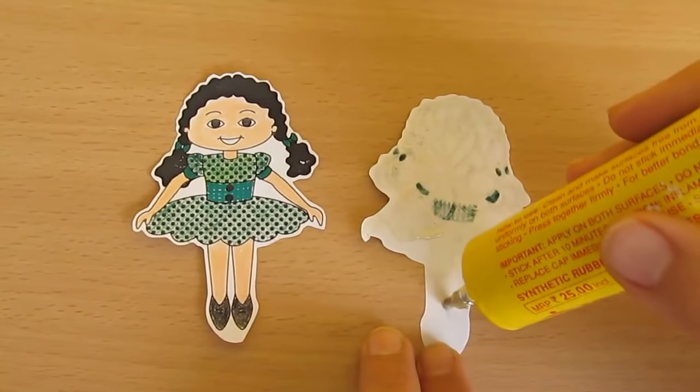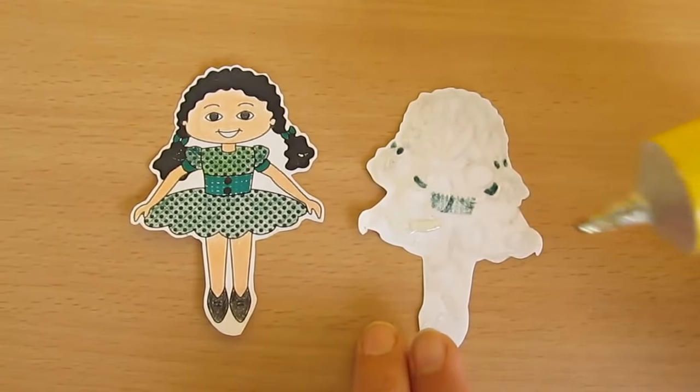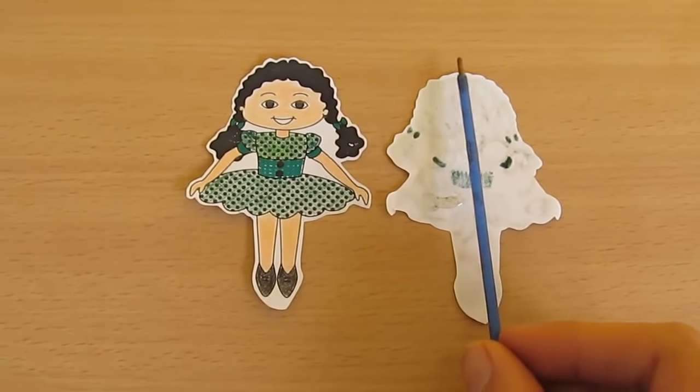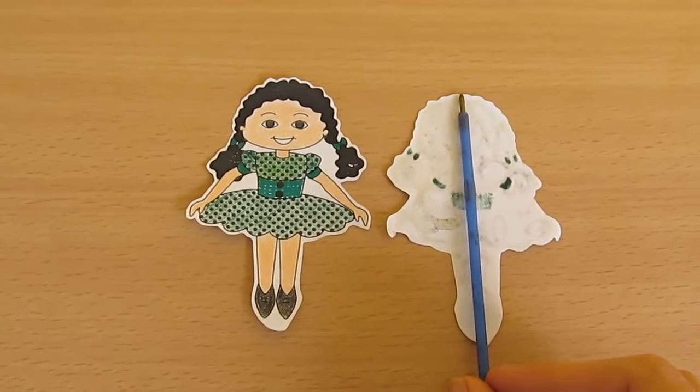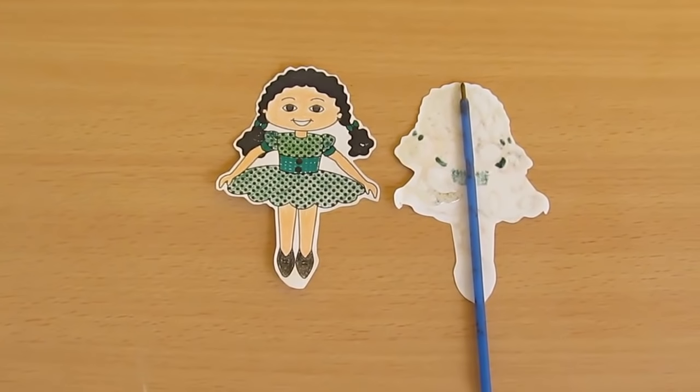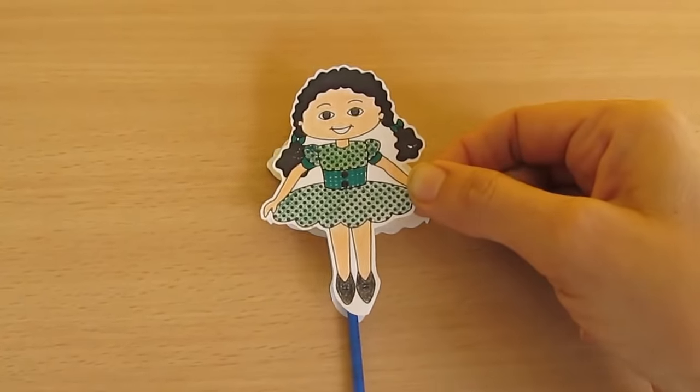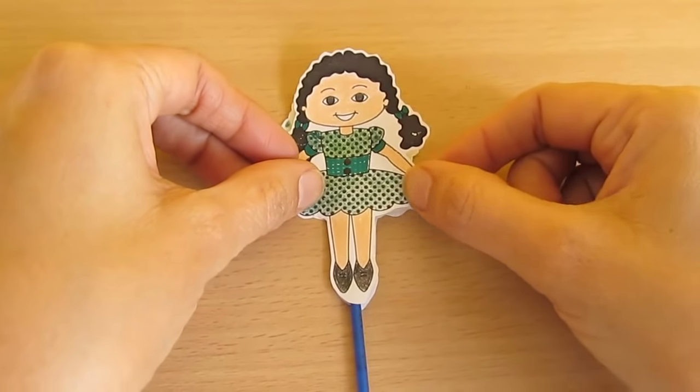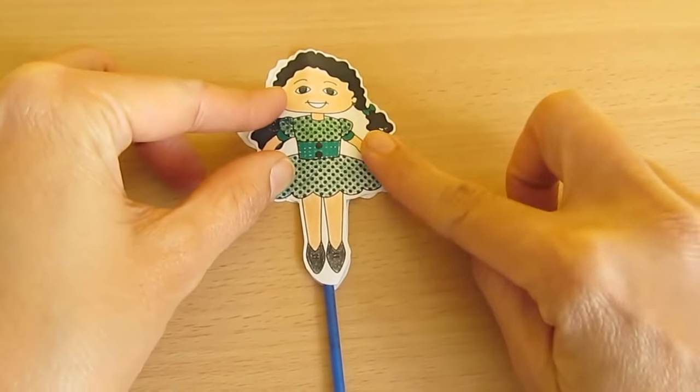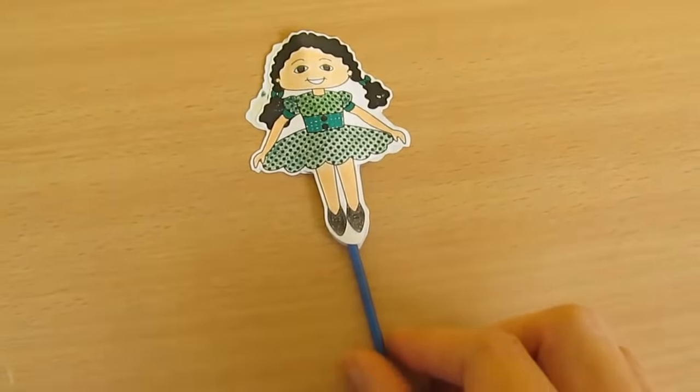You can see this doll has a line of symmetry in the middle, and that's where we place an old refill. Now the spinning doll is almost ready.